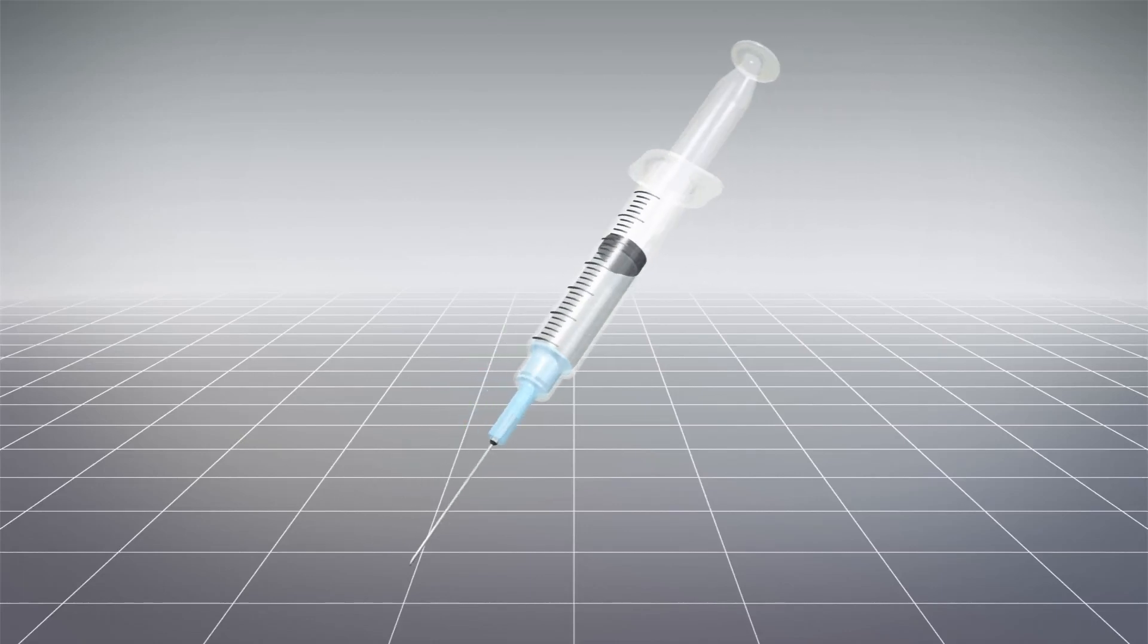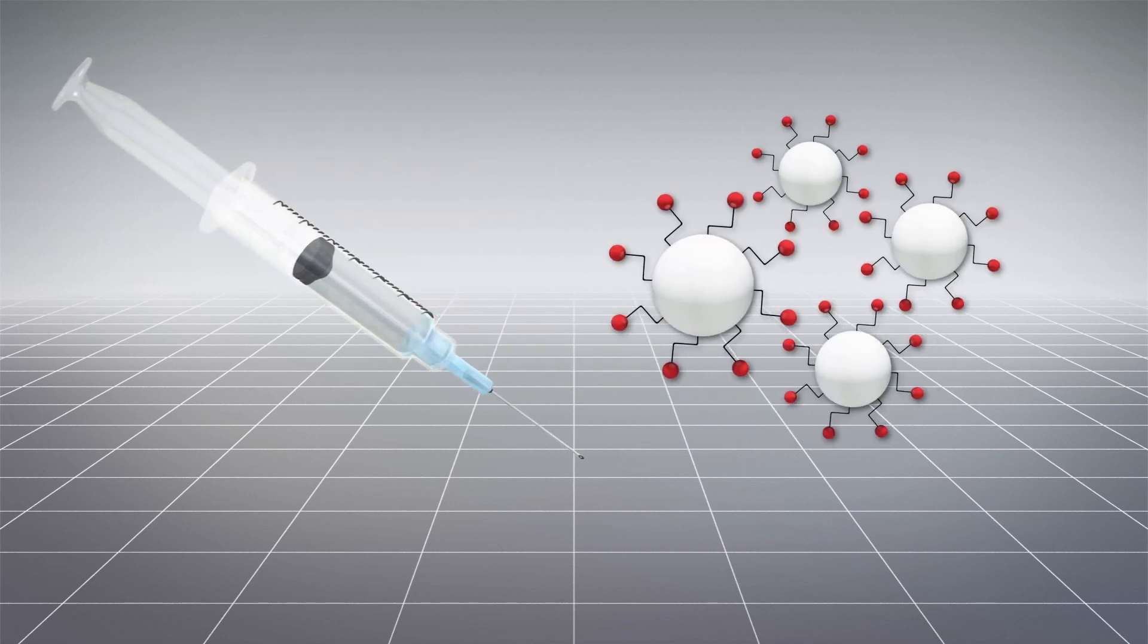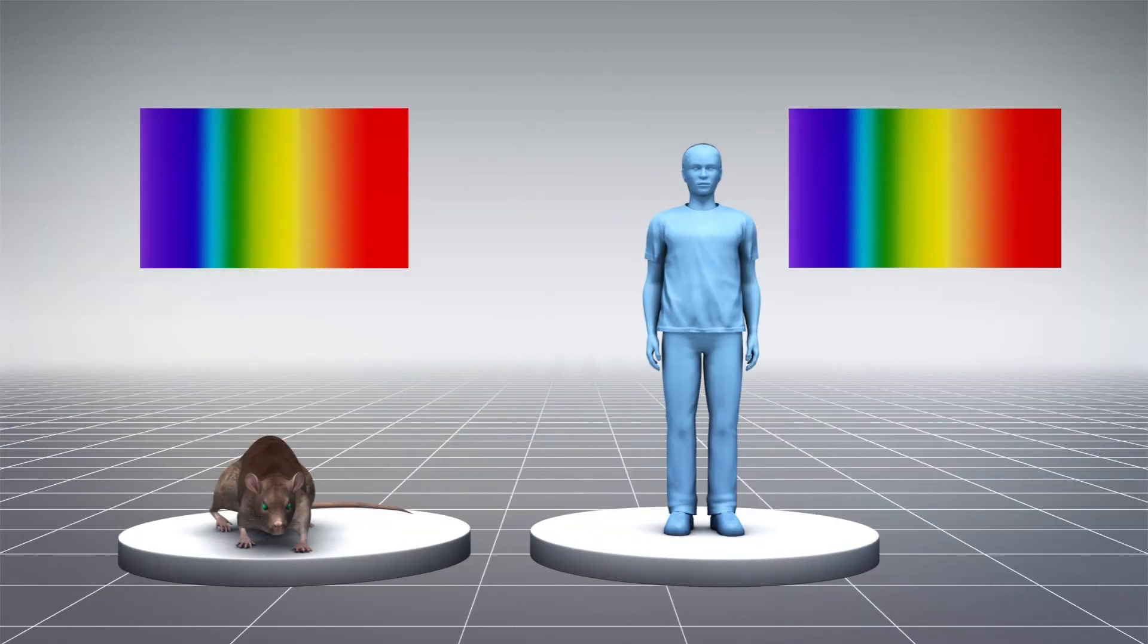A research team at the University of Science and Technology of China and the University of Massachusetts Medical School injected nanoparticles into the eyes of mice that gave them the ability to see infrared light without compromising their normal vision. Humans and mice are not able to see infrared light naturally. Both species are only limited to light in the visible spectrum.